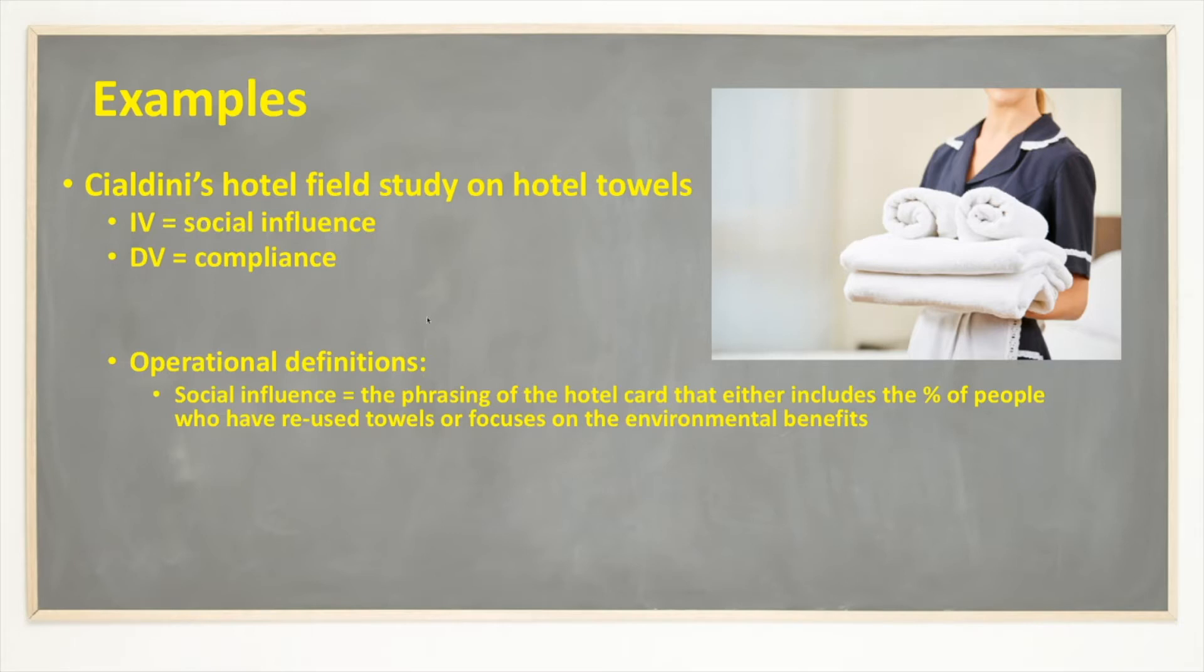So how they're manipulating social influence is by the phrasing of the hotel card. And you can see here in my example, I've clearly described the differences between the two cards. That's what makes this an operational definition. The compliance is measured by the percentage of people who reuse their towels, a very specific measurement of compliance. These are two operational definitions.